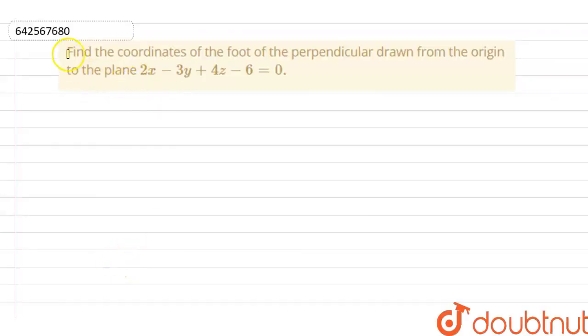The question is: find the coordinates of the foot of perpendicular drawn from the origin to the plane 2x - 3y + 4z - 6 = 0.